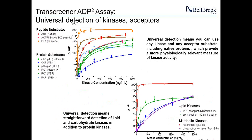This graph depicts the universal nature of the assay — universal detection means you can use this assay with any kinase. The ADP assay can be used with any enzyme class that produces ADP, including lipid kinases, carbohydrate kinases, and protein kinases, with either peptide substrate or full-length protein substrate. It provides a physiologically relevant measure of kinase activity.